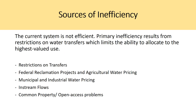The current system is not efficient. Primary inefficiency results from restrictions on water transfers, which limit the ability to allocate water to its highest-valued use. Marginal net benefits for all uses need to be equalized, and the source of inefficiency comes from the lack of transferability of rights to those who value them most. Additional sources of inefficiency include federal reclamation projects, municipal and industrial water pricing, in-stream flow problems, and common property and open access problems.